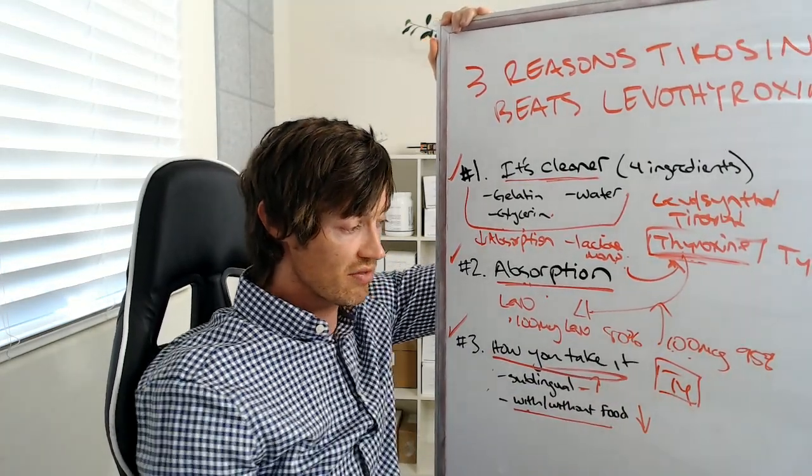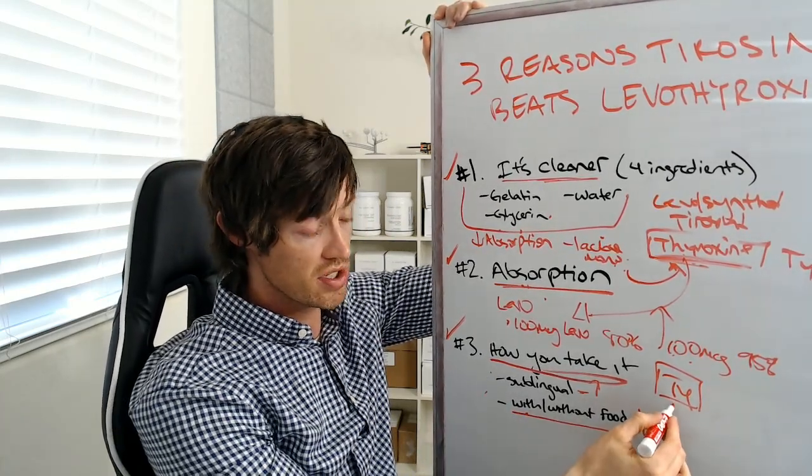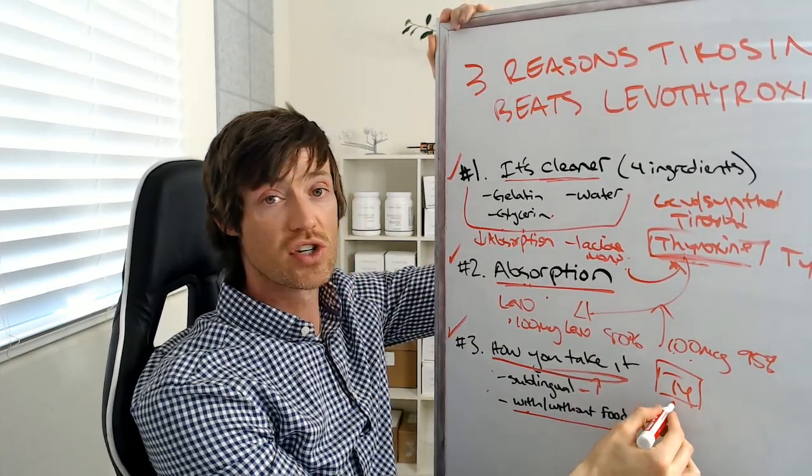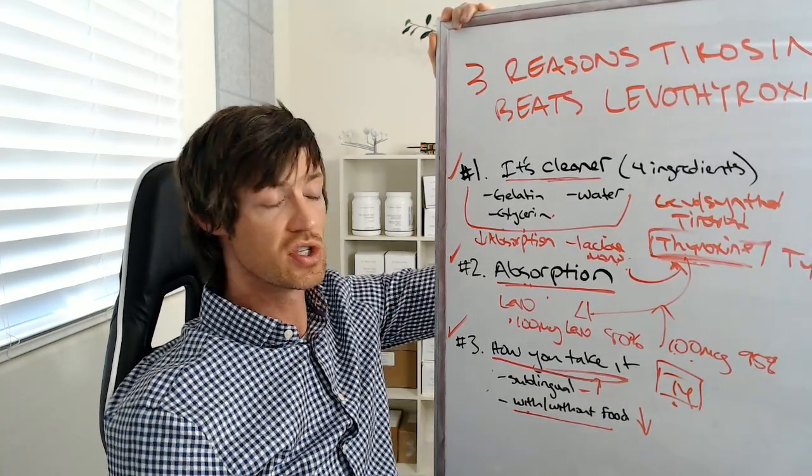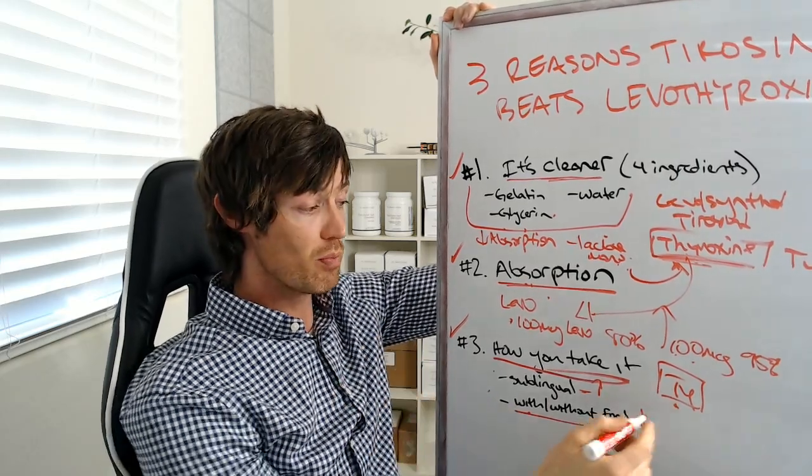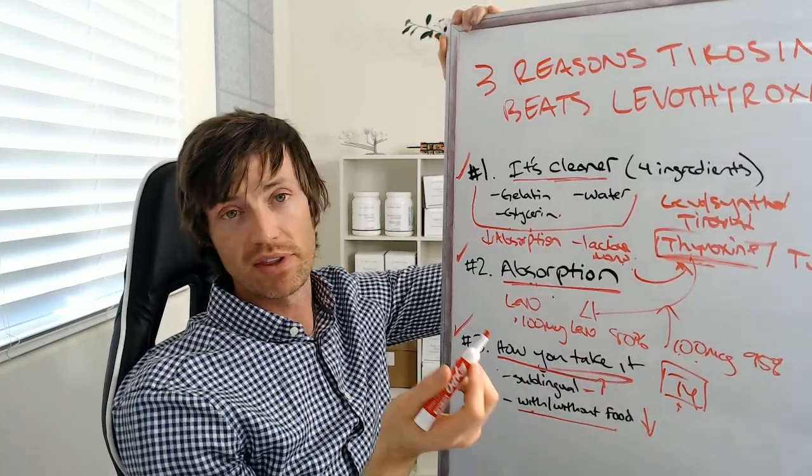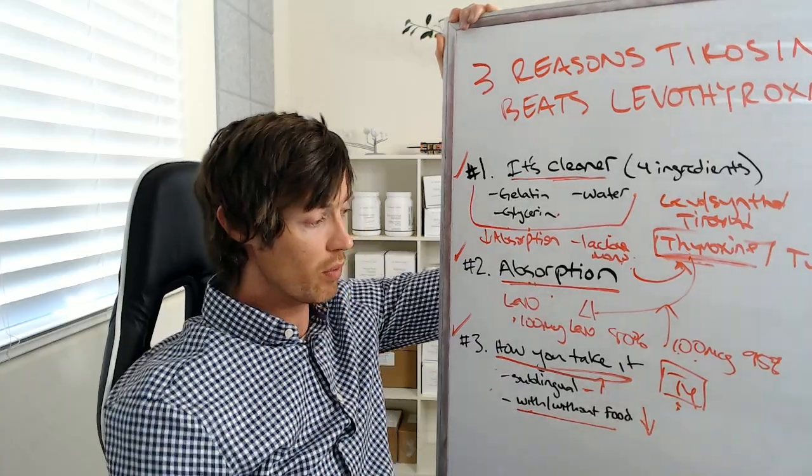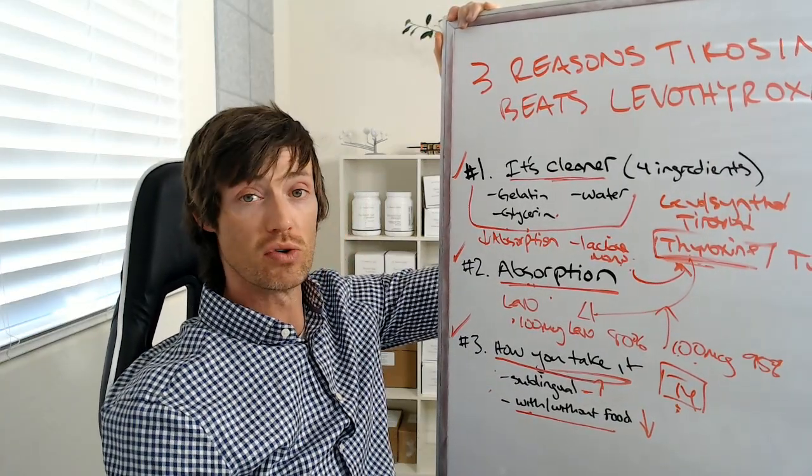And another huge benefit to using Tyrosyn is that it is a T4-only thyroid medication. Now, if you've been on my channel for any length of time, you know that generally T4 medications are not the best option for thyroid patients, but they have one big advantage. And that is that endocrinologists and primary care physicians are more likely to prescribe it because it is a T4-only medication. So because it's comparable in a sense to Levothyroxine, they're much more likely to prescribe Tyrosyn than they are, say, Cytomel, Liothyronine, or something like Armour Thyroid. So it may actually be easier to get because of this. So I would recommend looking into it, at least asking your doctor if this is something that could be used in your specific case.